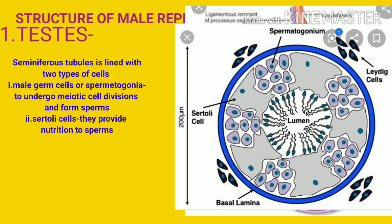Each seminiferous tubule is lined with two types of cells: 1. Male germ cells, 2. Sertoli cells. The male germ cells are also called spermatogonia. You can see the spermatogonia in the lining of seminiferous tubules. These spermatogonia cells undergo meiotic cell divisions and form sperms. Sperms are the male sex cells.